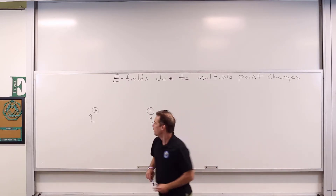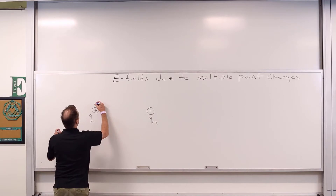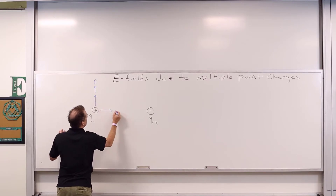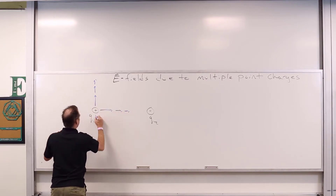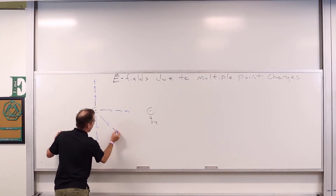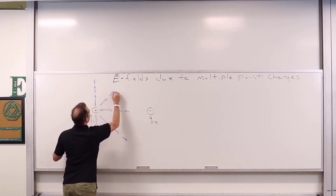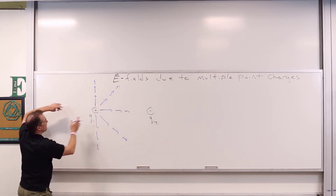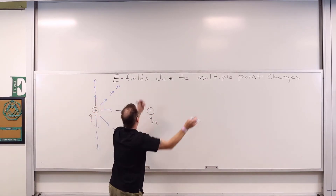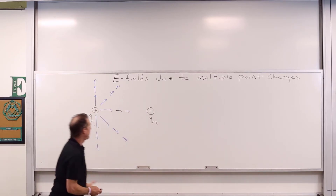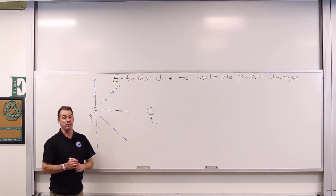Let me use blue for the positive point charge. I can just draw in some electric field vectors — just a couple of them. They keep on filling up the board. And then we've got the electric field vectors due to this negative charge as well.